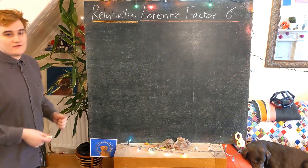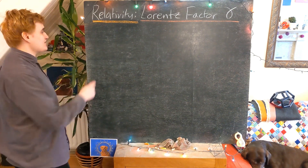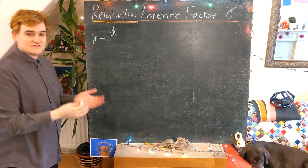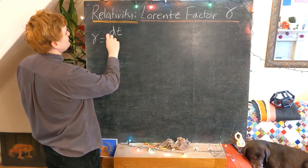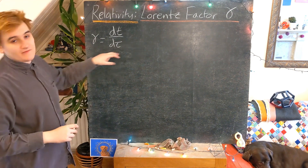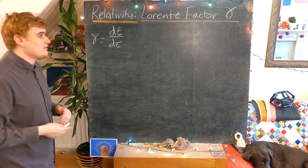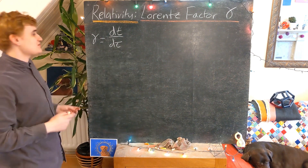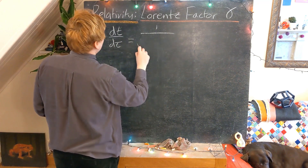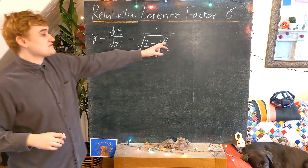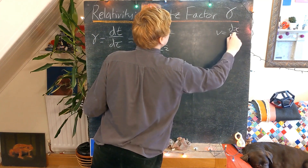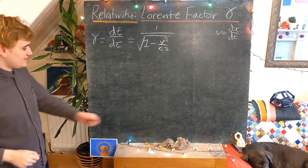We've realized now this Lorentz factor — we first defined the four-velocity, or we defined the time component of the four-velocity that measures how coordinate time changes with respect to proper time. And now by considering the normalization of the four-velocity, we are able to arrive at the following expression for the Lorentz factor, where v is of course the coordinate velocity in some particular frame.